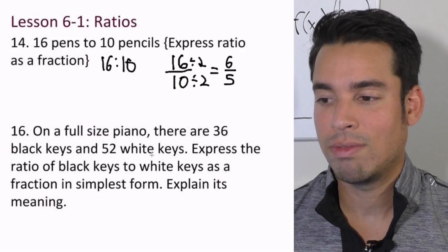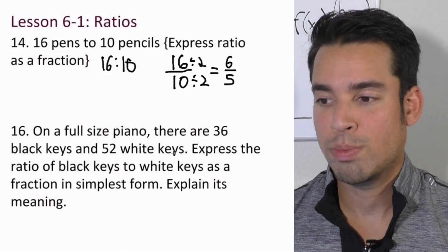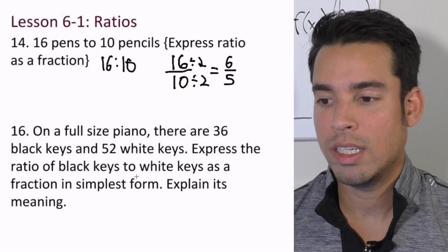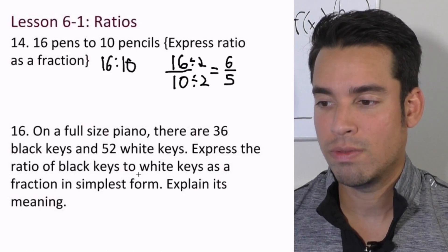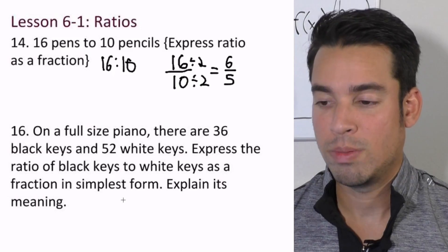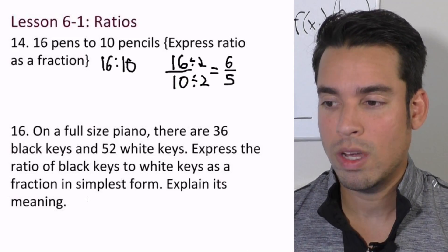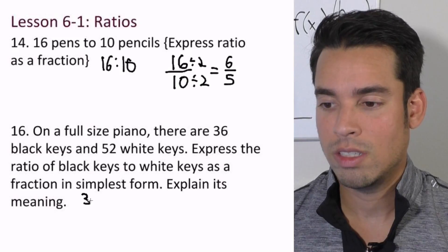Next, problem 16: On a full-size piano there are 36 black keys and 52 white keys. Express the ratio of black keys to white keys as a fraction in simplest form and explain its meaning. We'll talk about the meaning in a second. Again, we start off the same way, just like a fraction: 36